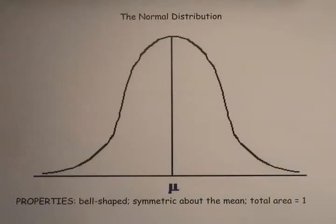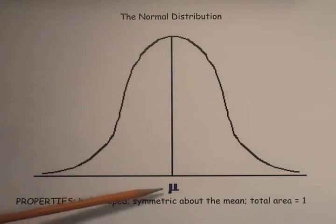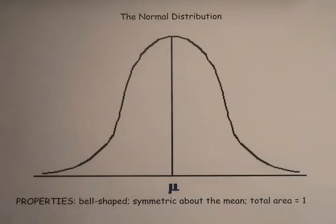The most basic thing that you can know about the normal distribution is that it is a bell-shaped curve, and it's always symmetric about its mean, mu, and the total area under the curve is always 1.